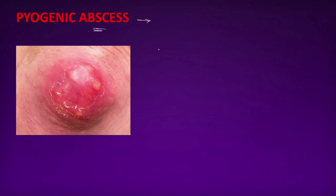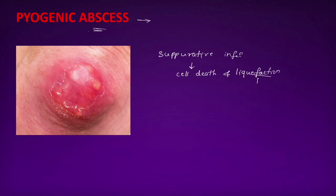Suppurative infection can lead to cell death and liquefaction. This liquefaction is due to proteolytic enzymes. As a result, an abscess is a cavity filled with pus and is lined by a pyogenic membrane.